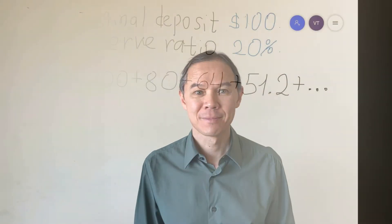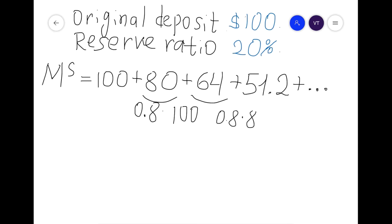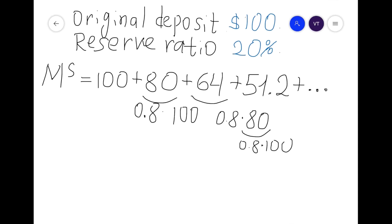We can use mathematical tricks to calculate how much money will be created in total. We have a sequence: 100 + 80 + 64 + … The $80 was 80% of $100, and $64 was 80% of $80 — which itself was 80% of $100.